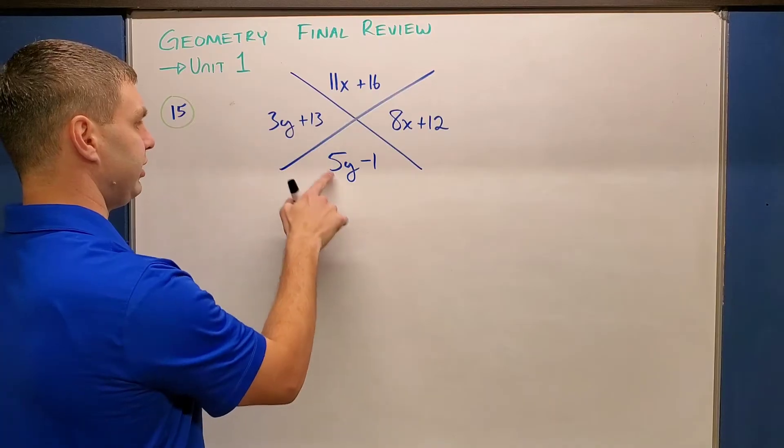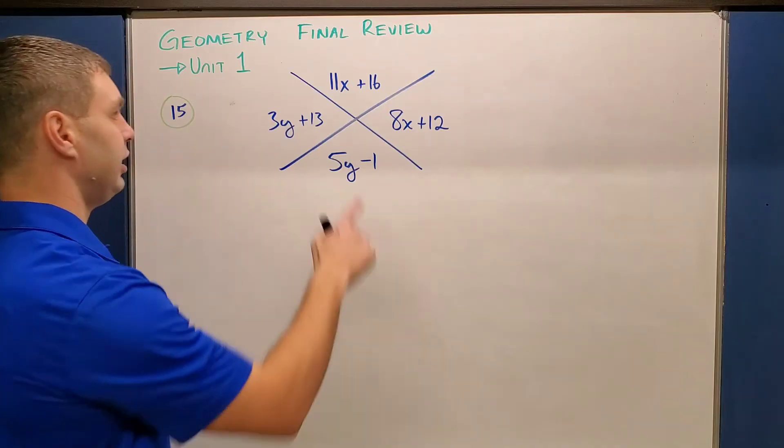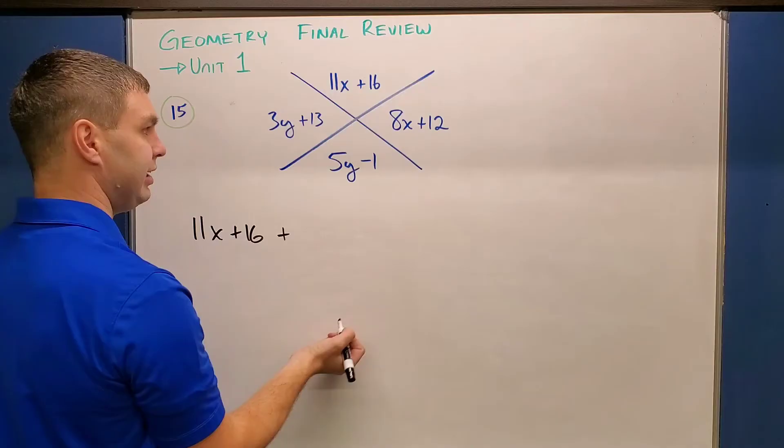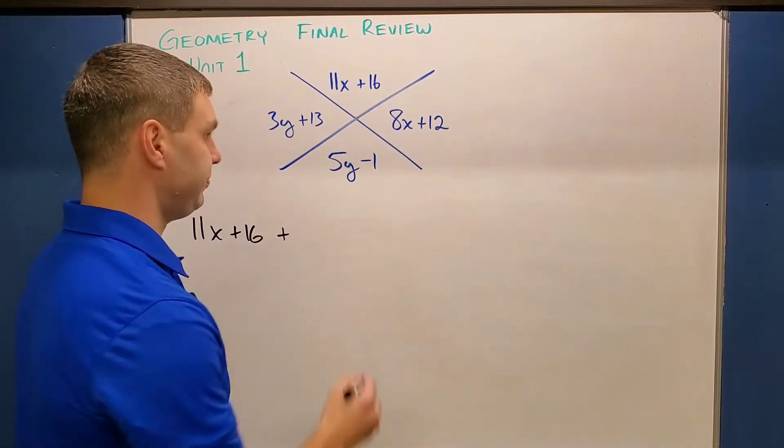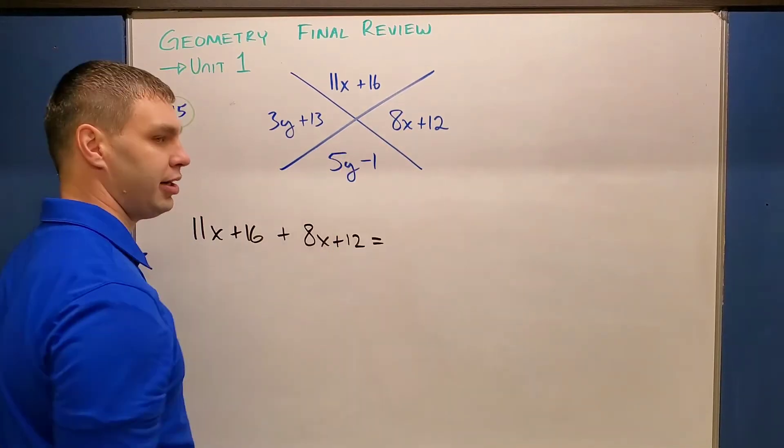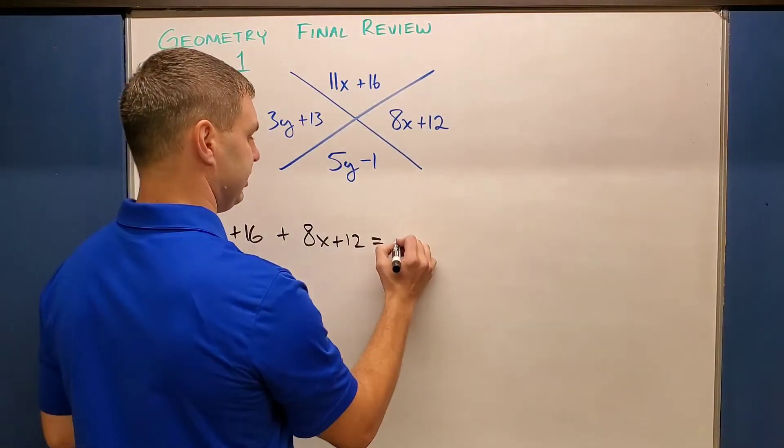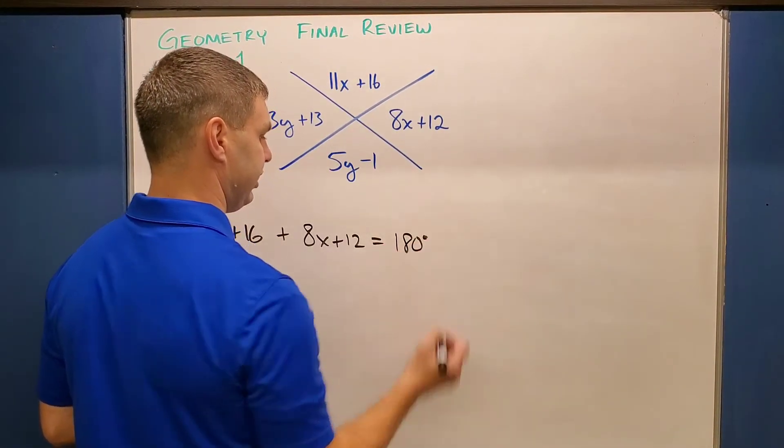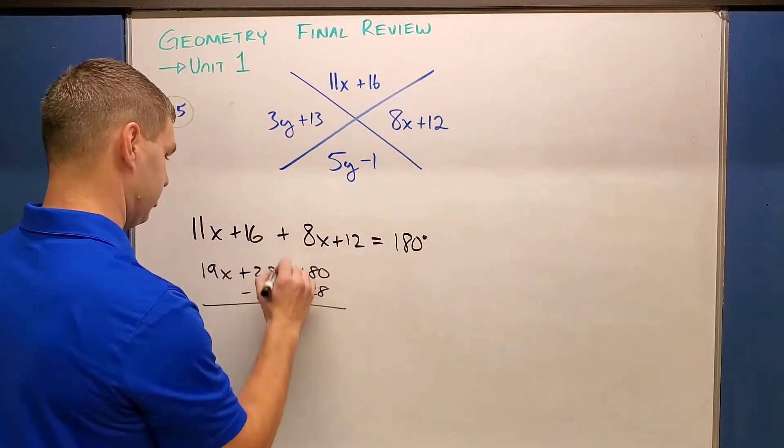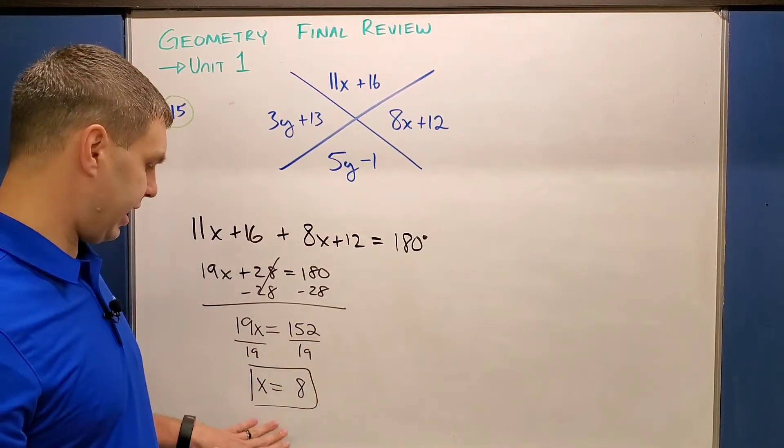I know it doesn't quite explicitly say it on your review packet, but that is what it's talking about. So for example, if I look at the Y values and the X values here, let me start with the X's since that's alphabetical order. What I'm going to do is take 11X plus 16 and add it to the other one, 8X plus 12. And then since this is a linear pair, I'm going to put it equal to 180 since they're along the same line. A linear pair adds up to be 180 degrees. Then I can go ahead and solve for X, which I'll do real quick for you. So for the X value, I get X equals 8.